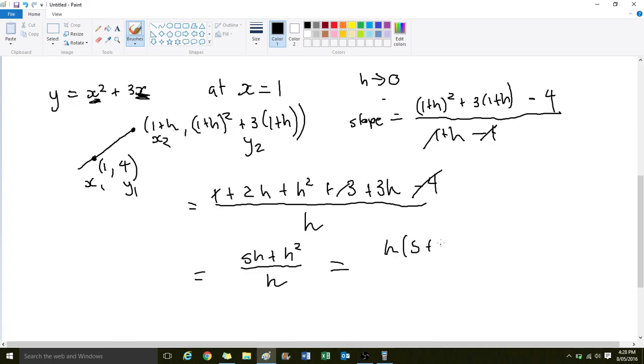So, we'll pull that out the front. And we can cancel the h out, because it's at the top and the bottom. And so, the answer that we have is 5 plus h. But as h approaches 0, the slope is equal to 5.